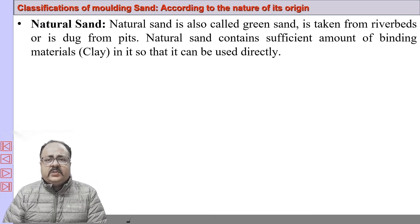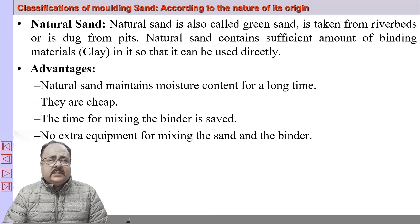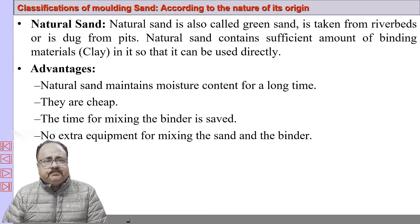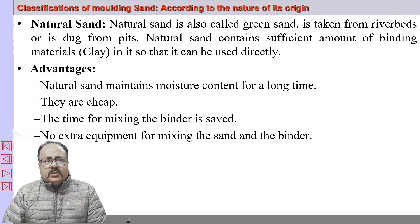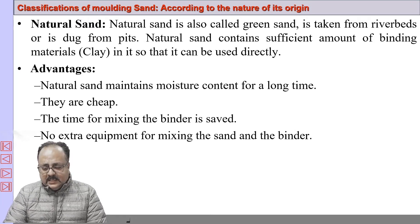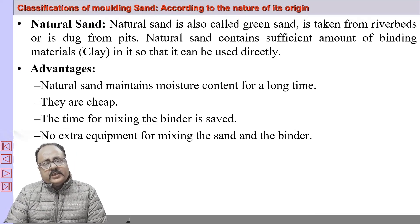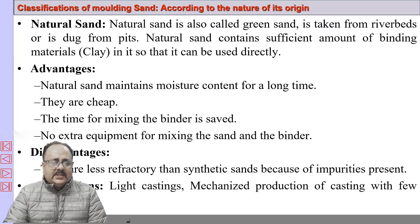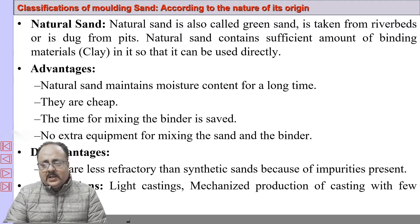If we classify molding sands according to their origin, some are called natural sands — those available in sand pits near riverbeds. Advantages: natural sand maintains moisture content for a long period, is cheaply available, and saves time for mixing binder with no extra equipment needed. Disadvantages: they are less refractory than synthetic sands due to impurities. Applications: mainly for light castings and mechanized production of castings with few cores.